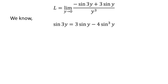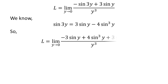We know sin(3y) is equal to 3 times sin(y) minus 4 times cube of sin(y). The verification of this trigonometric identity has been explained in the video appearing in the right corner. The link is also given in the description. Applying the above identity gives us: L is equal to the limit of minus 3 sin(y) plus 4 sin³(y) plus 3 sin(y) upon cube of y as y approaches 0.